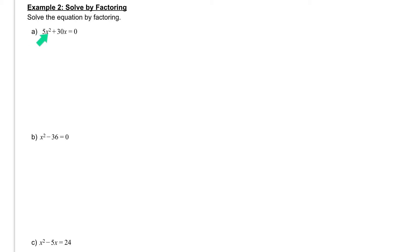If we take a look at letter A, we have 5x² + 30x = 0. What we have to do is factor that left hand side. Let's go through our rules of factoring. The first thing is to look for a greatest common factor.